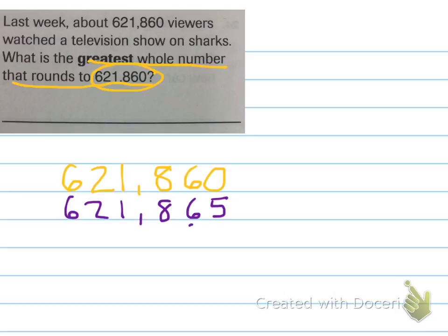The greatest whole number, I'm going to start in the second to last place, the bossy number 5 would bump that up to a 7. So, no, that wouldn't work. I know my rule for rounding is 5 or above, give it a shove, 4 or below, just let it go.